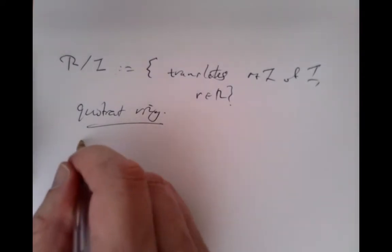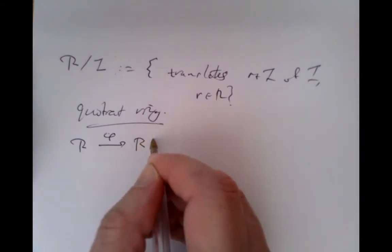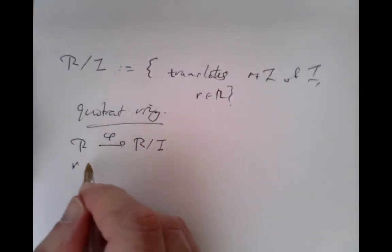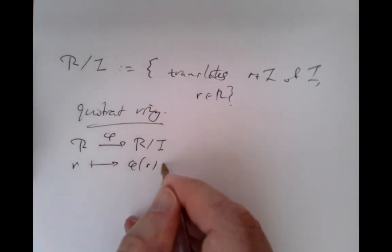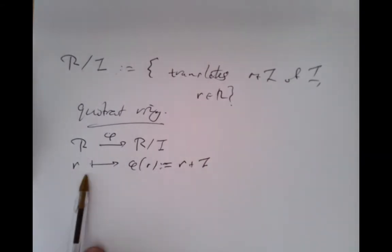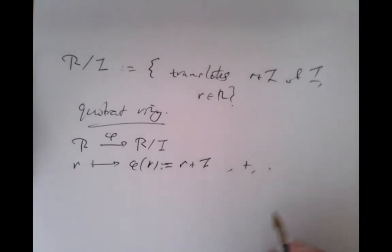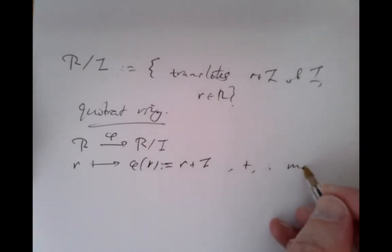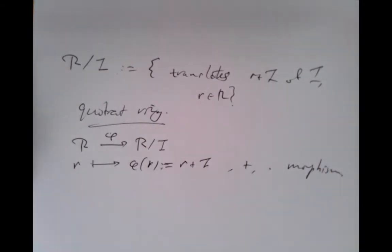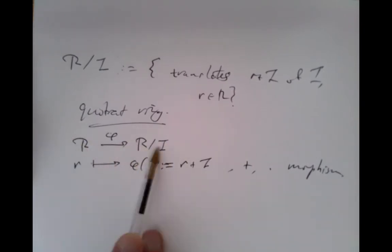Moreover, we have an obvious quotient map — a map from R to R mod I — which takes each element little r to its translate r plus I. We've already checked that this map takes addition to addition and multiplication to multiplication, so it is a morphism of rings. So we have a quotient ring and a quotient map that pushes the usual ring down into this quotient.